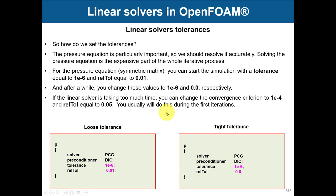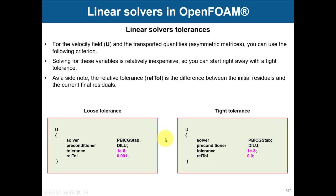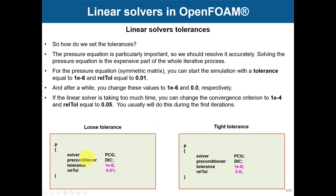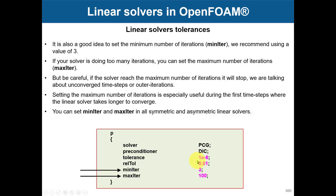Sometimes I talk about loose and tight tolerance. For pressure you might use a loose tolerance during initial iterations and tight tolerance for the final. For velocity it is inexpensive, so I like to go straight to a tight tolerance. Regarding minimum and maximum iterations, by default the maximum in OpenFOAM is 1000. I don't like to set a maximum — I just set minimum iterations to two or three and leave the maximum at the default.